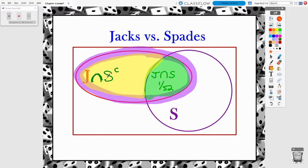Jacks that are not spades. And remember, how many jacks were there that weren't spades? There were three of them that weren't spades. There was clubs, diamonds, and hearts.